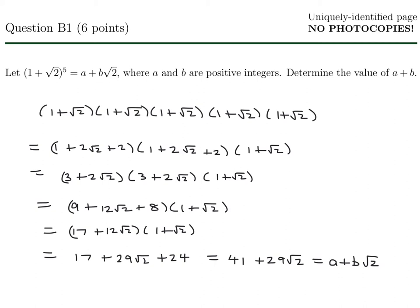Okay, so this is 41 plus 29 root 2. And that is my a plus b root 2. So therefore, it looks to me that a is 41 and b is 29. And therefore, a plus b will be 41 plus 29. And that is 70.